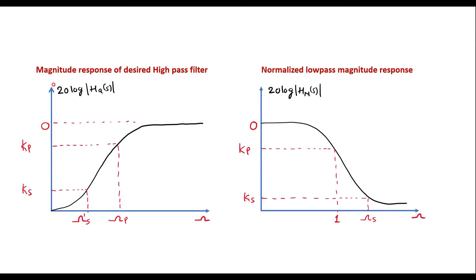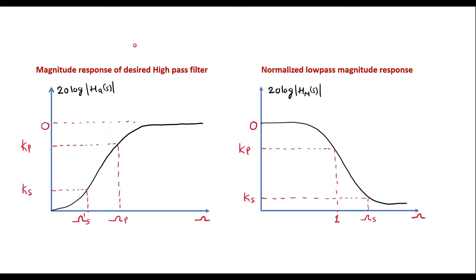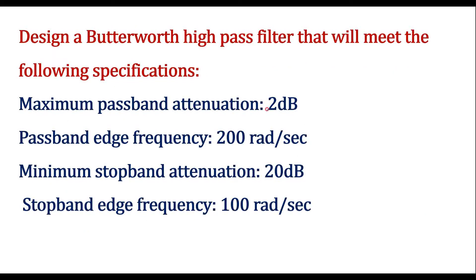Here I have shown the magnitude response of the desired high pass filter. We are supposed to design this high pass filter, and this is the normalized low pass magnitude response. With respect to the given data, the maximum passband attenuation means that Kp is equal to minus 2 dB. Kp and Ks are always negative values — though given as positive, we must consider them as negative. The passband edge frequency is 200 radians per second.